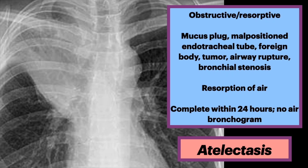There are many mechanisms of atelectasis. The first type is obstructive or resorptive. Common causes include mucus plugging, malpositioned endotracheal tube, foreign bodies, tumors, airway rupture, or bronchostenosis. There is resorption of air, which can be complete within 24 hours without evidence of air bronchograms.